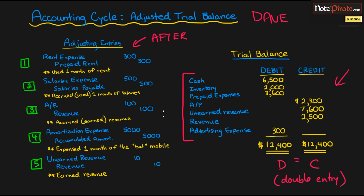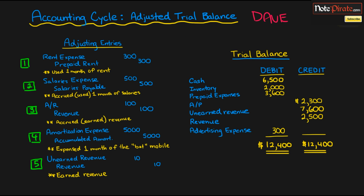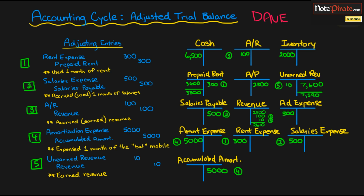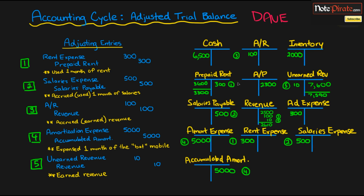The best way to summarize and compile all the new balances is to create T accounts. So let's get rid of this original trial balance and bring up all the different T accounts that I've prepared beforehand. The first T account is, of course, cash. The final balance is unchanged from the beginning because adjusted entries do not affect cash accounts. So that is going to be $6,500.